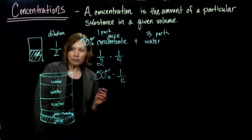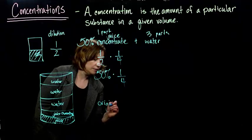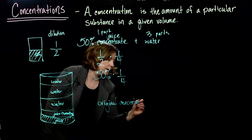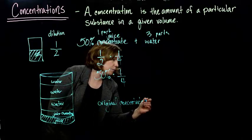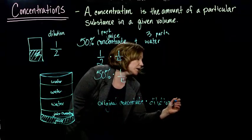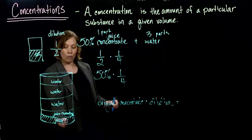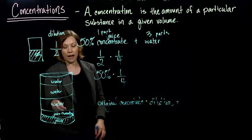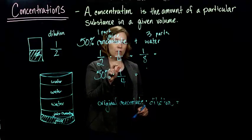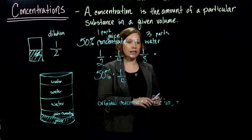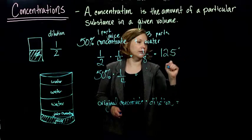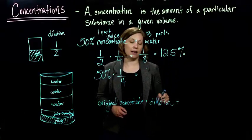The original concentrate, and I multiplied it by the dilution, and that tells me how much of the concentrate I have in my new mixture. My diluted mixture. One-half multiplied by one-fourth, I get one-eighth, which is 12.5%, if I convert that one-eighth to a percent.